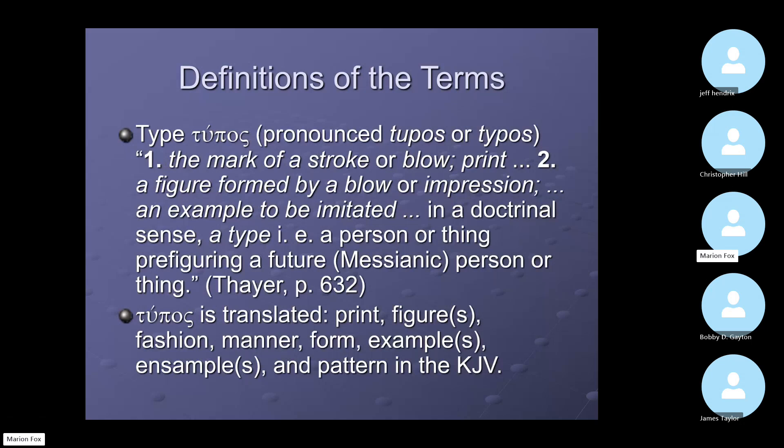Tupos is translated in the King James Version as: print, figure, figures, fashion, manner, form, example, examples. These words are spelled in different ways and patterned in the King James Version, but all of these words come from that same Greek word.